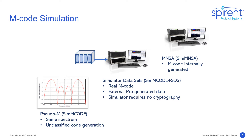Eventually, real M-code is needed for testing, and the government provided datasets of real M-code that are played through a simulator without the simulator having to have any knowledge of the underlying code generation. As receiver development progressed, simulation needs evolved from receiver development to integration and fielding. Simulators are now allowed to implement the modernized security architecture, MENSA, and internally generate M-code.